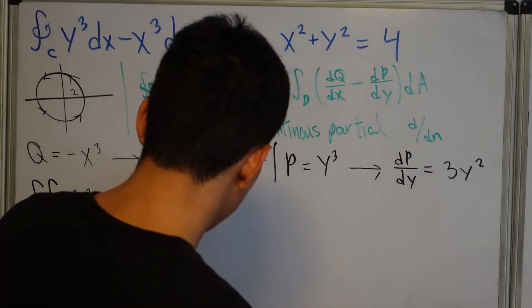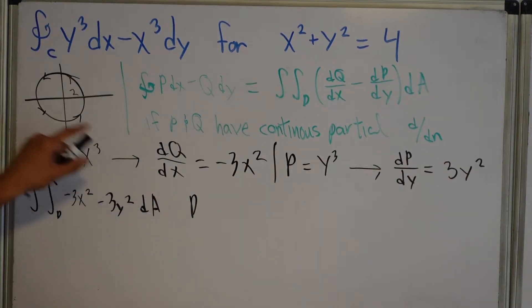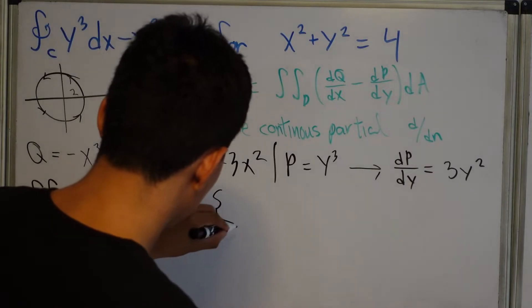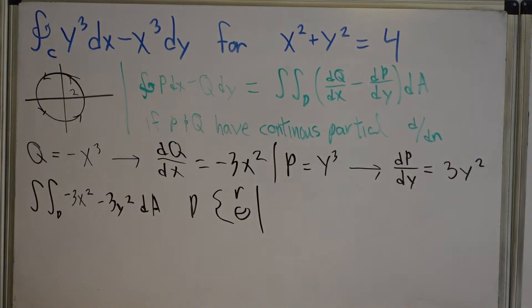So we can say that D, hmm, we want to describe this domain. What can we use? We can use polar, right? So D goes, it's in this R and theta plane. It's in our polar plane. If it's in our polar plane.